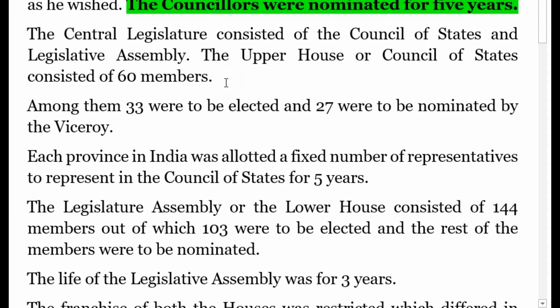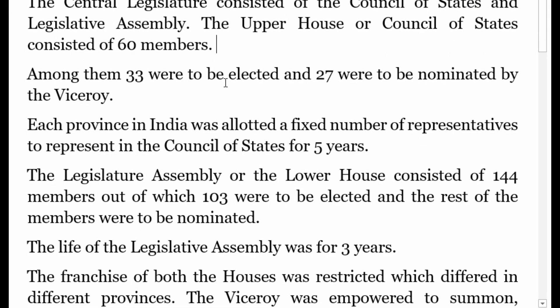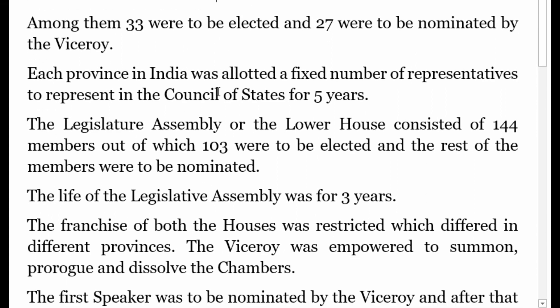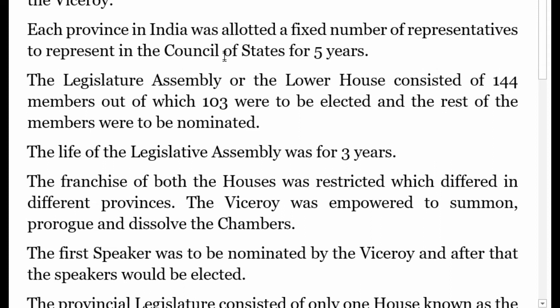The central legislature consisted of the Council of State and the Legislative Assembly. The upper house, or Council of State, consisted of 60 members — 33 were to be elected and 27 were to be nominated by the Viceroy. Each province in India was allotted a fixed number of representatives to the Council of State for five years.